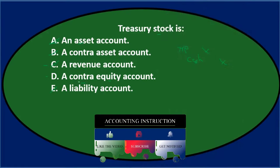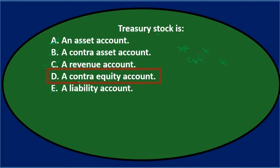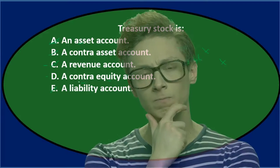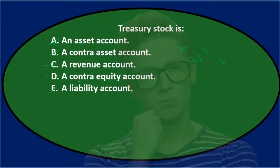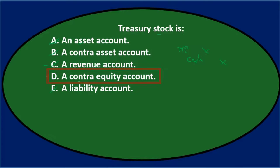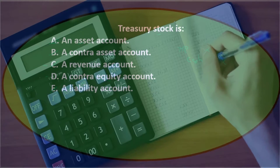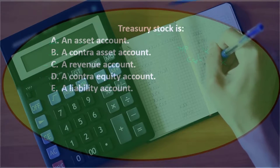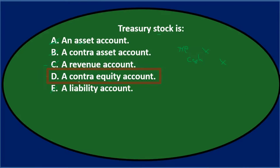That contra concept can be confusing because we first learn contra accounts with accumulated depreciation, a contra asset with a credit balance. We might start thinking all contra accounts have credit balances. But what makes an account contra is that its balance is opposite to the normal balance of that account type. Assets normally have debit balances, so accumulated depreciation has a credit balance. Equity accounts normally have credit balances, so Treasury stock, with a debit balance, is contra to the equity section norm.